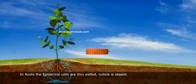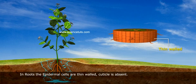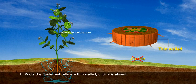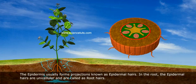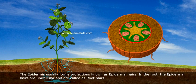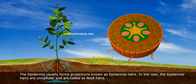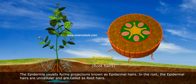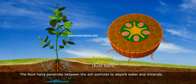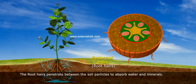In roots, the epidermal cells are thin-walled and the cuticle is absent. The epidermis usually forms projections known as epidermal hairs. In roots, the epidermal hairs are unicellular and are called root hairs. The root hairs penetrate between the soil particles to absorb water and minerals.